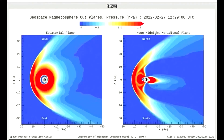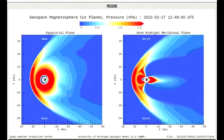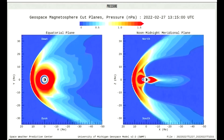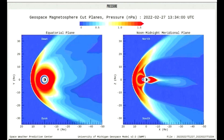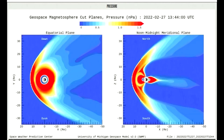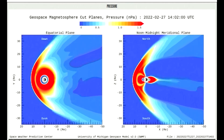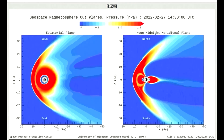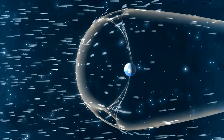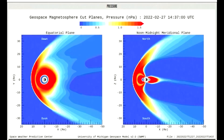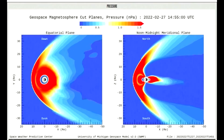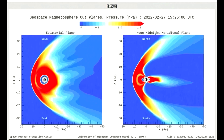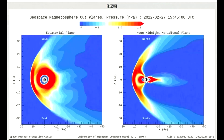On this geospace magnetosphere model, the solar pressure is shown for today, which is moderately high. Watch as the magnetosphere fluctuates as waves of solar energy pass over it. The magnetosphere is the region around a planet dominated by the planet's magnetic field. The Earth has the strongest one of all the rocky planets. Earth's magnetosphere is a vast, comet-shaped bubble, which has played a crucial role in our planet's habitability.